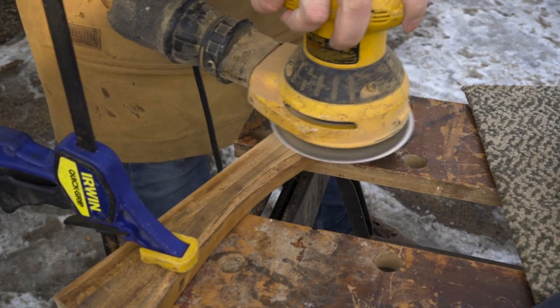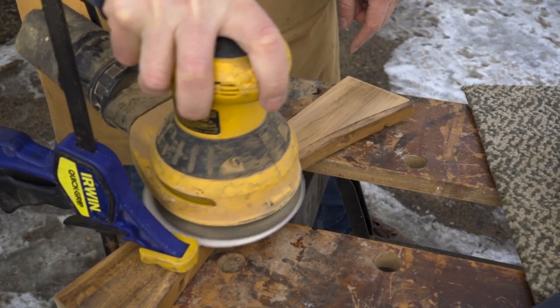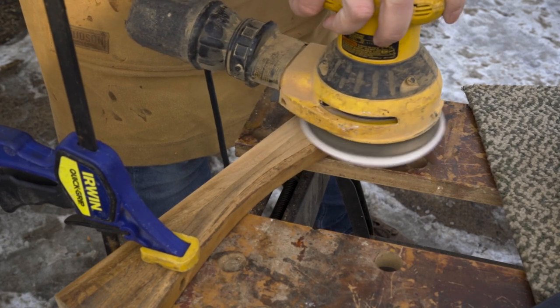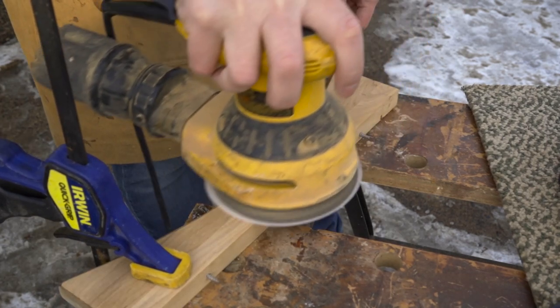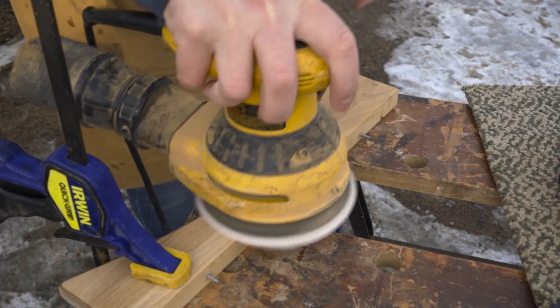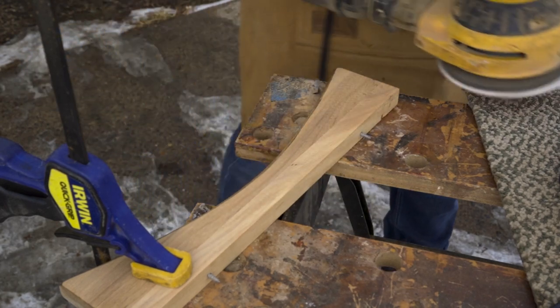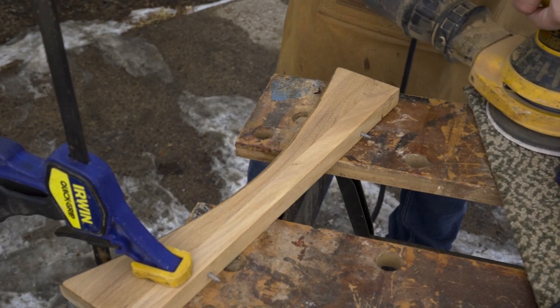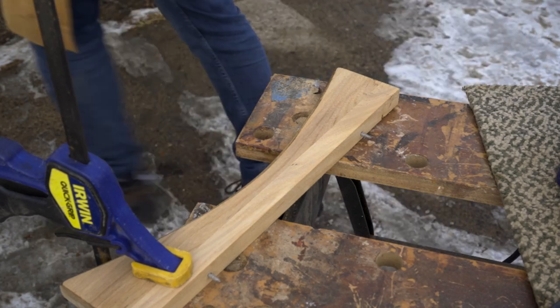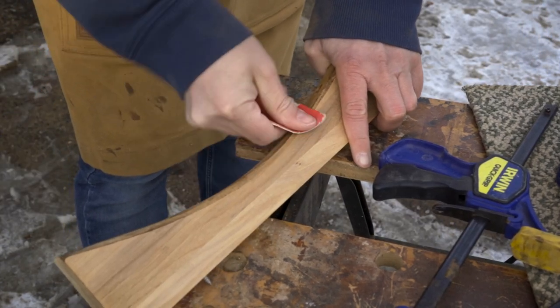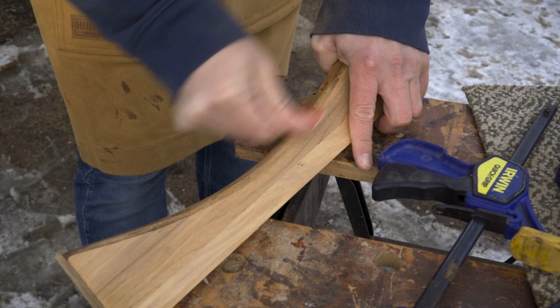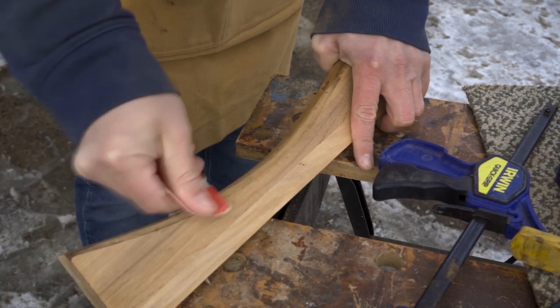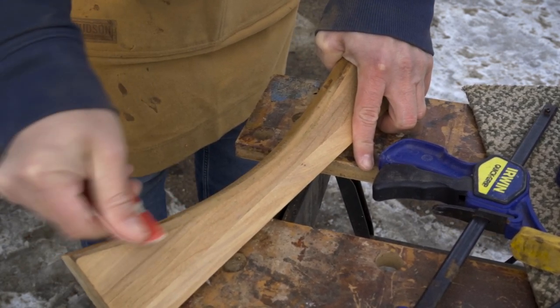Once I had scraped off as much as I could, I sanded it. I used an orbital sander, and I was very careful, especially on these apron pieces, not to go over the edge and change the contour. That's easy to do, so you have to be careful. I used the same process to remove the finish on the legs.